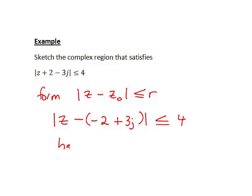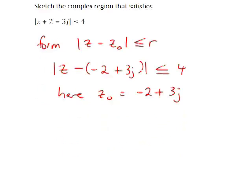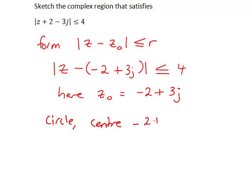In this case, z₀ = -2 + 3j. We'll sketch a circle with center at z₀ = -2 + 3j and radius 4.